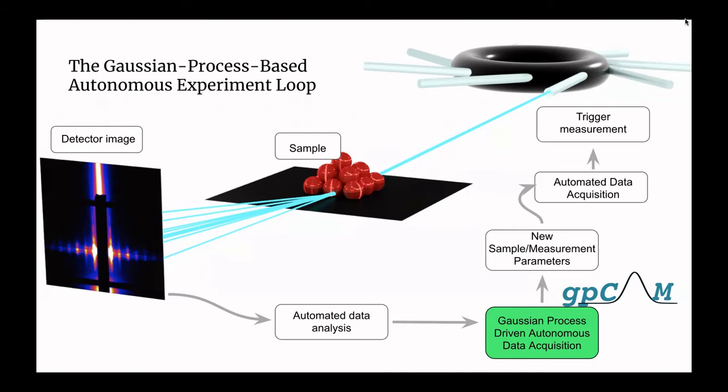For this, we have developed GP CAM, a tool that is based on a Gaussian process that can tell the instrument which place in a large parameter space to measure next. This parameter space is spanned by parameters the instrument, but also the sample, depend on.